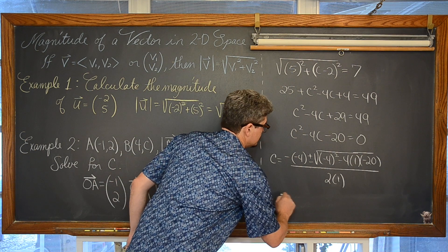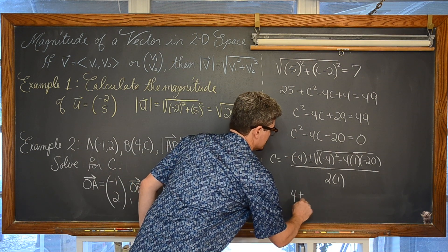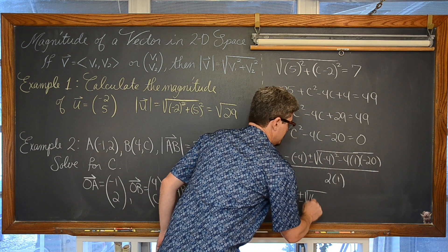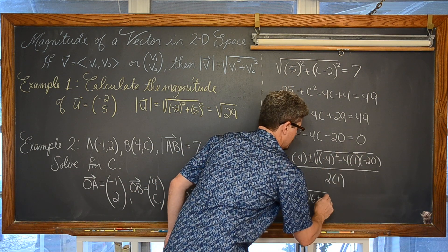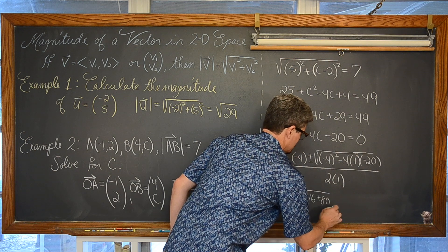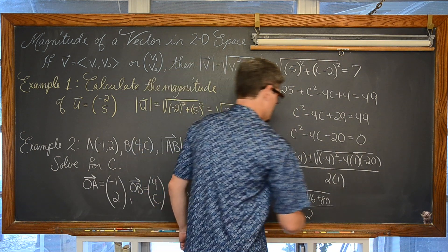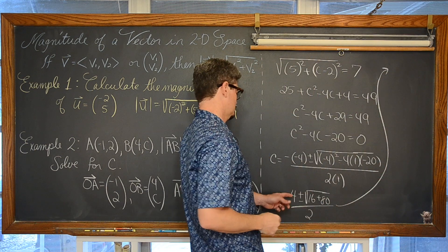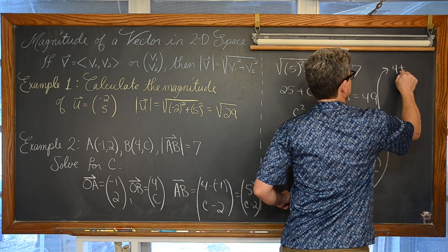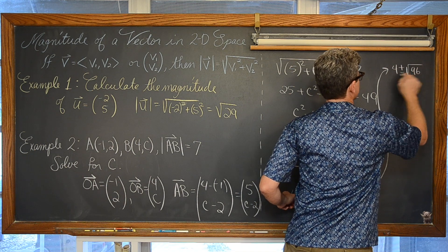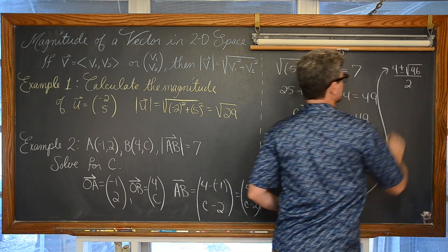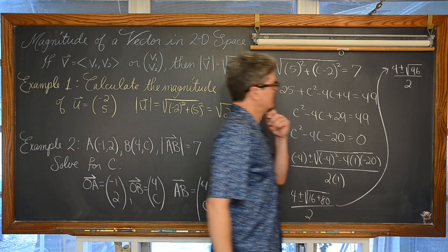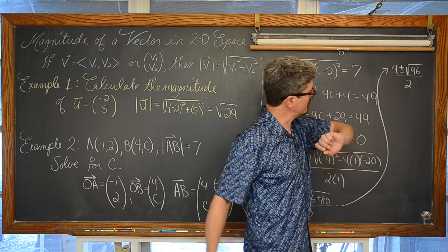That is going to come out to be 4 plus or minus the square root. We have 4 squared is 16. We have got 80 over 2. Now we are looking at 4 plus or minus the square root of 96 over 2. We have a factor of 16 in here, right?